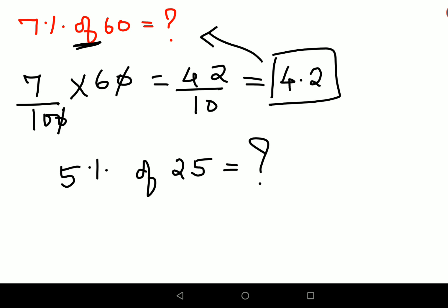Okay, but still I'm going to show you one more method for this one. See, understand, we have 7% of 60 that is to be found.